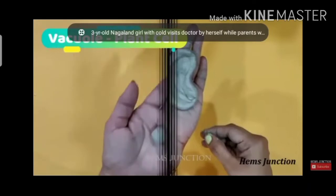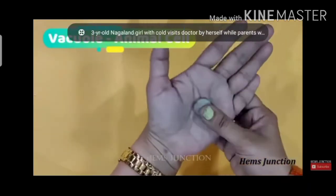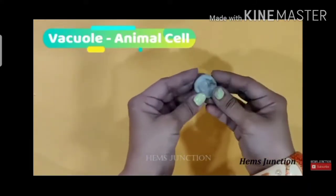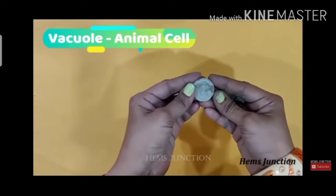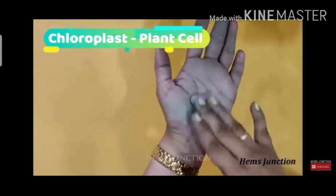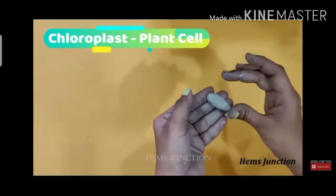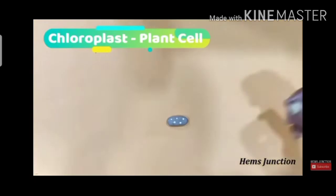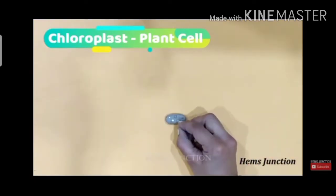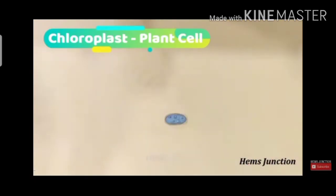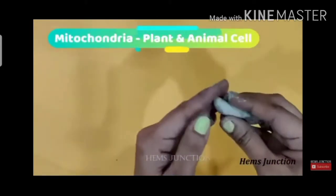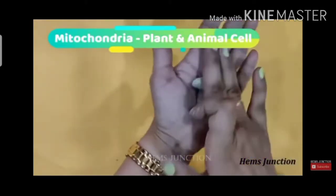This is the shape of the vacuole — this is a very important part for the cell. You will have to prepare two of each, one for the animal cell and one for the plant cell. Next, you will prepare the chloroplast — this one is the chloroplast.